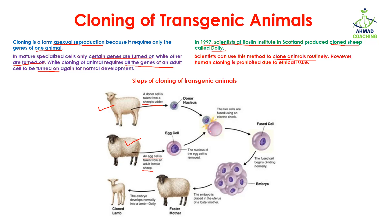Then you are going to insert this donor nucleus into the egg cell. This means the egg cell is from one donor, but the nucleus present inside the egg is from another donor. So it is like two animals combined here, giving us a fused cell.